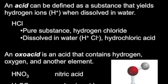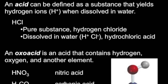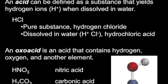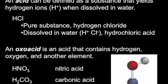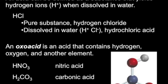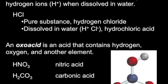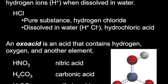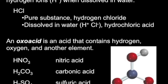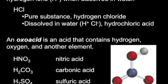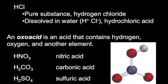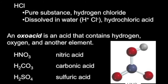Some of these polyatomics exist as acids. An acid can be defined as a substance that yields hydrogen ion when dissolved in water. For example, HCl — we have hydrogen as the cation and chlorine as the anion, so the pure substance is named hydrogen chloride. But when dissolved in water, it breaks into H+ and Cl-, giving it the ability to generate H+ in solution, so we call it hydrochloric acid. Oxo acids — polyatomics — also have these capabilities: things like nitric acid, carbonic acid, and sulfuric acid.